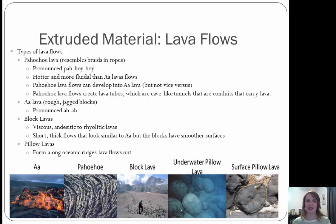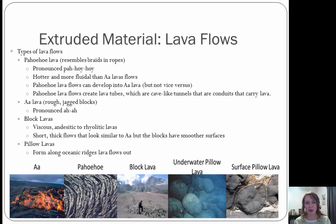Our next type of lava is aa, and these are jagged blocks. The easiest way to tell the difference between pahoehoe and aa is that aa is so rough that if you were to touch it, it would be jagged and rip your hand up. So if you touch it, it's like 'ah-ah,' like it hurts.